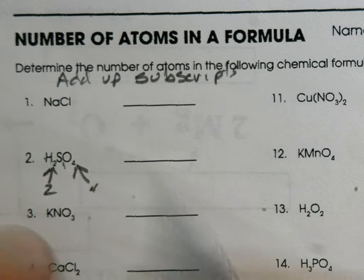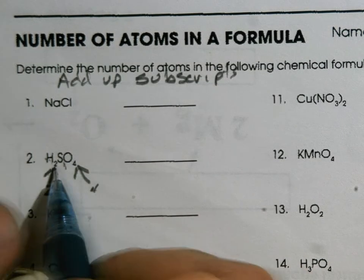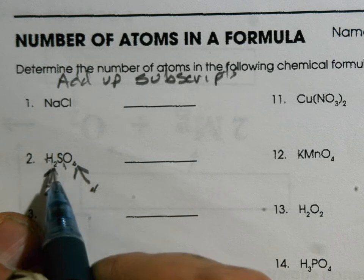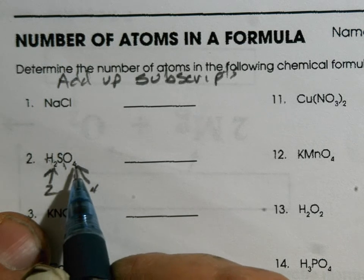So when we go to work on this, we've got two hydrogens plus one sulfur - now we're up to three - and then we got to add four oxygens, so one, two, three, four, five, six, seven. Seven atoms all together in that one.